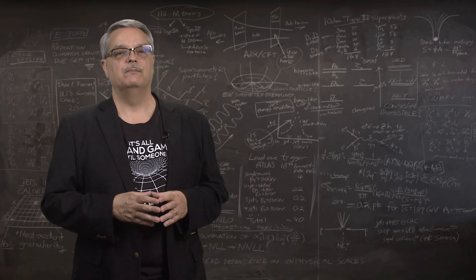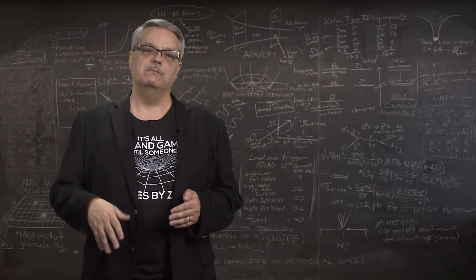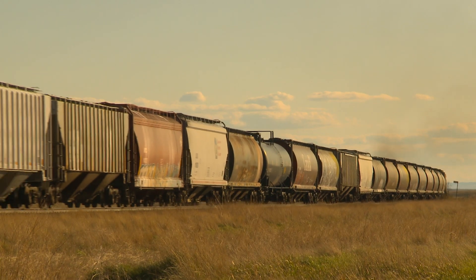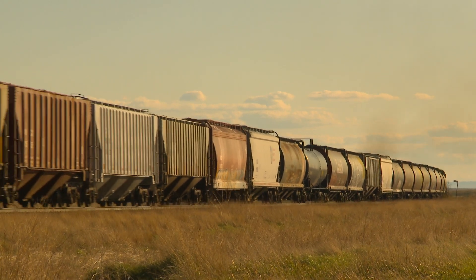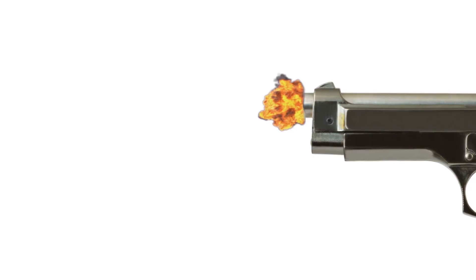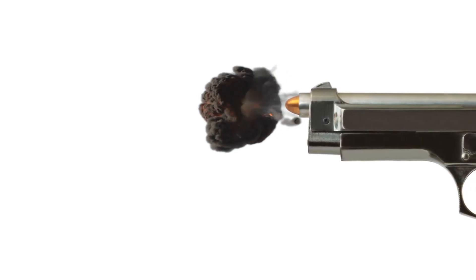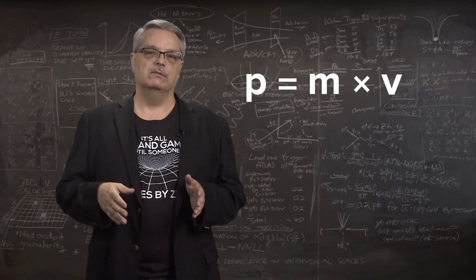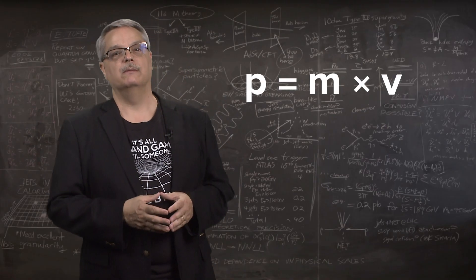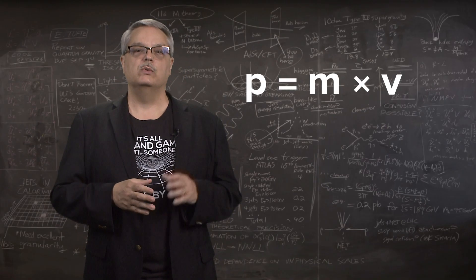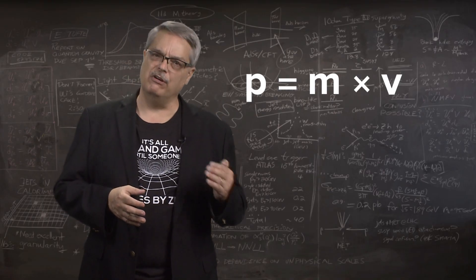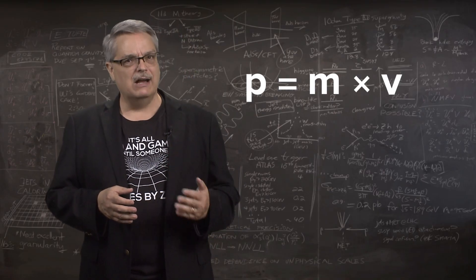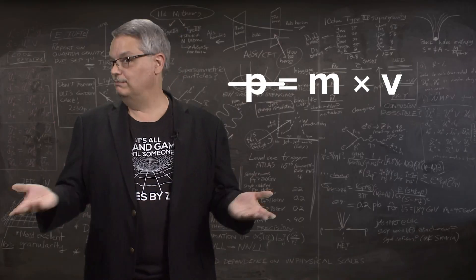Momentum is related to inertia. Something with a lot of momentum is hard to stop. But that could be a slow moving but very massive train, or a very light but super fast bullet. That equation and those intuitions are pretty familiar. The problem arises when we start going at speeds that are very fast. At very high speeds, this equation no longer applies.